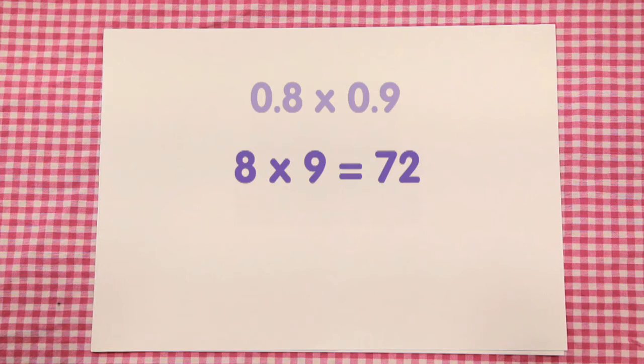We need to be aware that there is a decimal point that is not normally written when we have whole numbers. The 8 is actually 8.0 and 9 is actually 9.0. 8 multiplied by 9 equals 72.